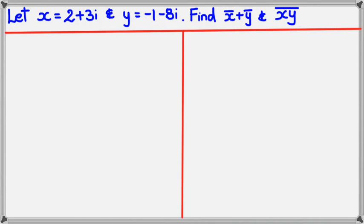Let's have a look at a couple of examples where how this works out. So if we have x equals 2 plus 3i and y equals negative 1 minus 8i, we want to find the conjugate of x plus conjugate of y, and then we want to figure out the conjugate of the product of xy.